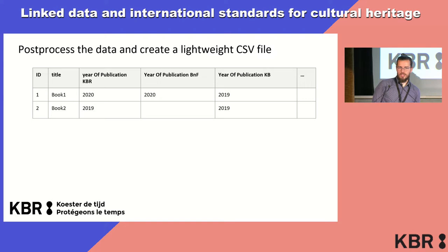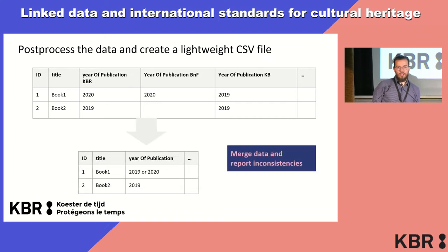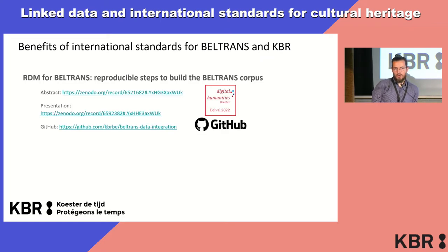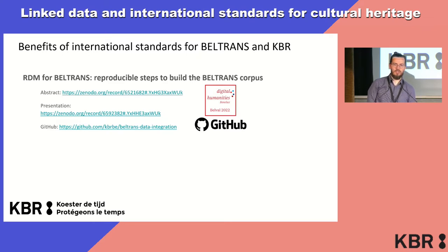In the end, we do some post-processing because we now have access via the identifiers as a bridge to different sources. So we can say, for book one: what's the publication date according to source A, B, and C? Then we can do some semi-automatic or automatic aggregation, and we can even see quality issues which a human librarian has to check. The benefit for KBR for the Beltrans project is that the research data management has reproducible steps to build the corpus. There was also a presentation earlier this year at the DH Benelux conference in Luxembourg, and things are open source and on our GitHub.